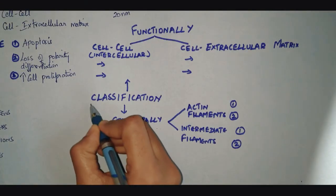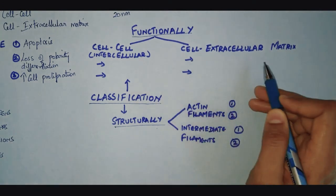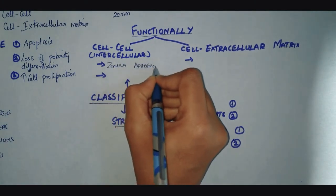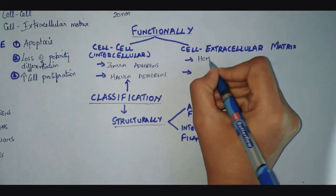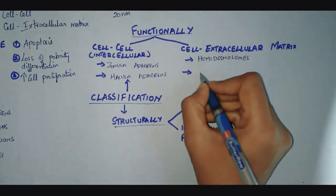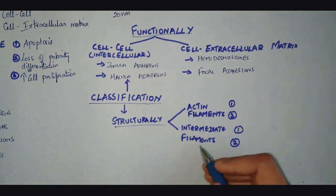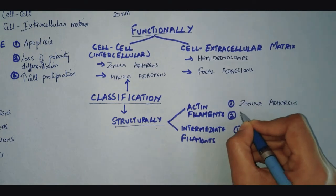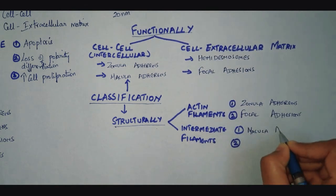Let us move on to the classification of anchoring junctions. Functionally and structurally, we can classify them. Functionally, based on whether the junction is intercellular or between the cell and the extracellular matrix. The intercellular junctions are the zonula adherens and the macula adherens, whereas those between the cell and the extracellular matrix are the hemidesmosomes and focal adhesions. Based on cytoskeletal interaction, those that interact with actin filaments are the zonula adherens and focal adhesions, whereas those that interact with intermediate filaments are the macula adherens and the hemidesmosomes.